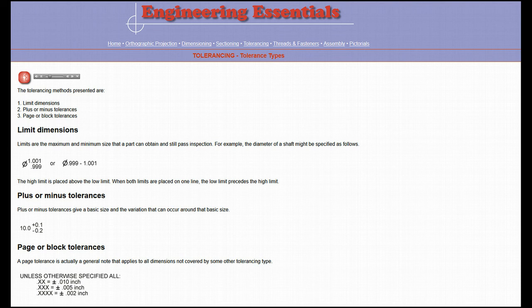Limit dimensions state the maximum and minimum size that a feature is allowed to be and still pass inspection. The low limit is always placed first or on the bottom. Limit dimensions are nice because the machinist does not have to calculate any limits.